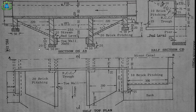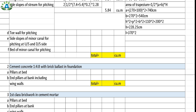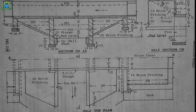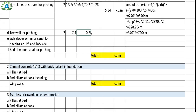Next is the toe wall calculation. We have 2 toe walls with width 20 centimeter and height 50 centimeter. The total length equals (100 + 270) × 2 = 740 centimeter = 7.4 meter. Width equals 0.2 meter and height equals 0.5 meter.